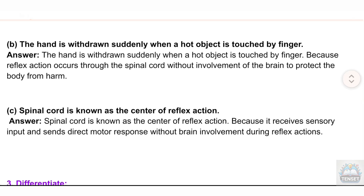(b) The hand is withdrawn suddenly when a hot object is touched by a finger. Answer: The hand is withdrawn suddenly when a hot object is touched by a finger because reflex action occurs through the spinal cord without involvement of the brain, to protect the body from harm.